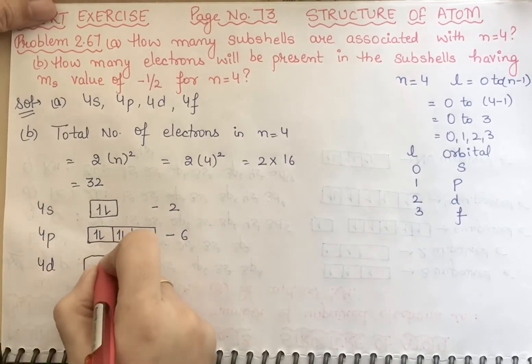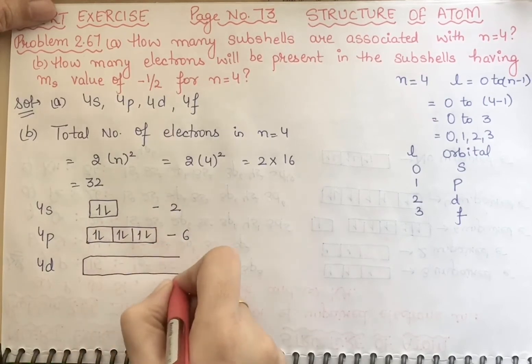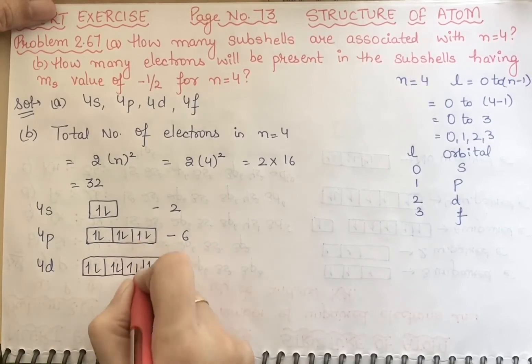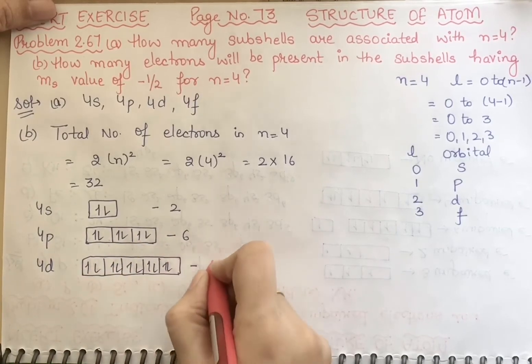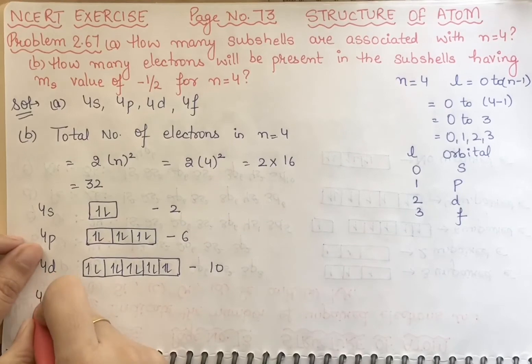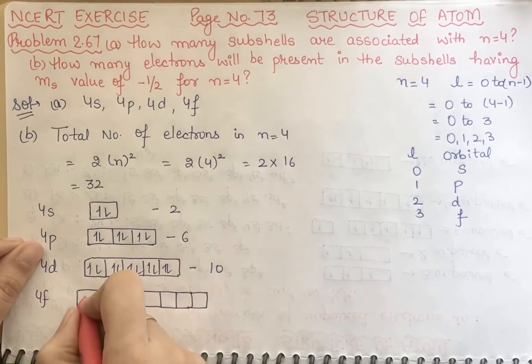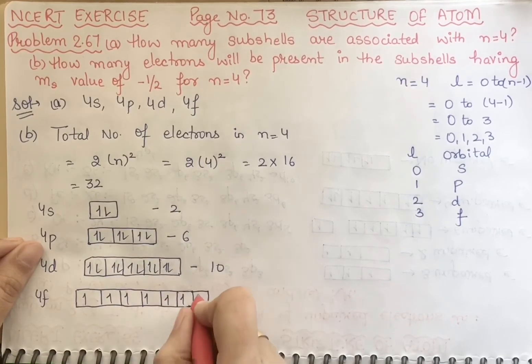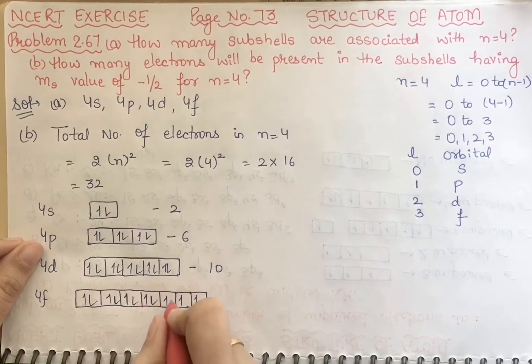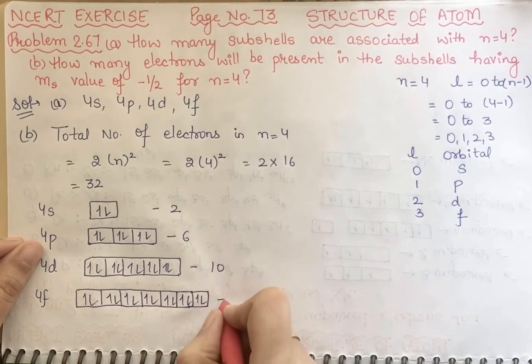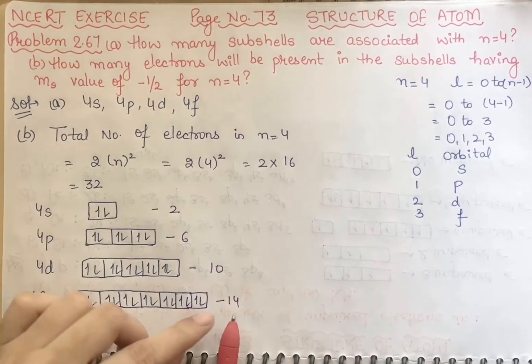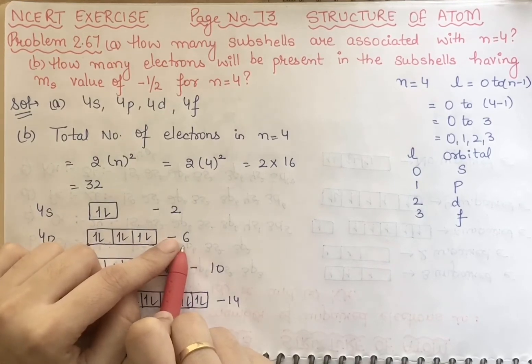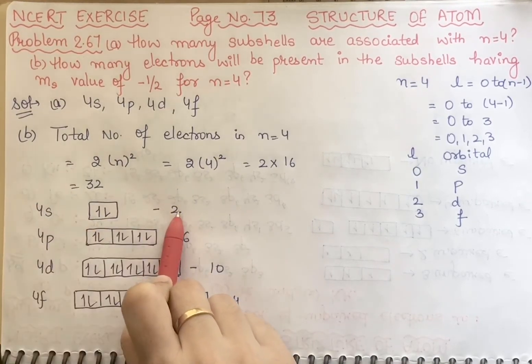How will you get in 4d? You will have 10 electrons: 1, 2, 3, 4, 5, 6, 7, 8, 9, 10. And in 4f you will have 14 electrons: 1, 2, 3, 4, 5, 6, 7, 8, 9, 10, 11, 12, 13, 14. So 14 plus 10 means 24, plus 6 that means 30, plus 2 equals 32.